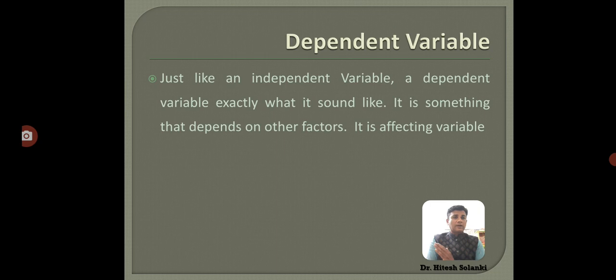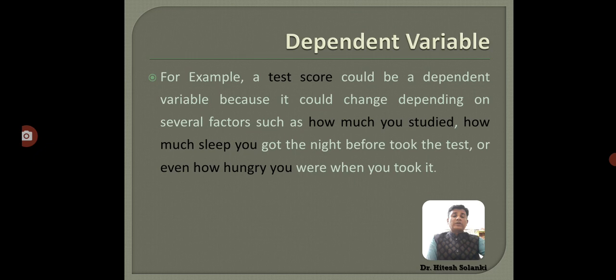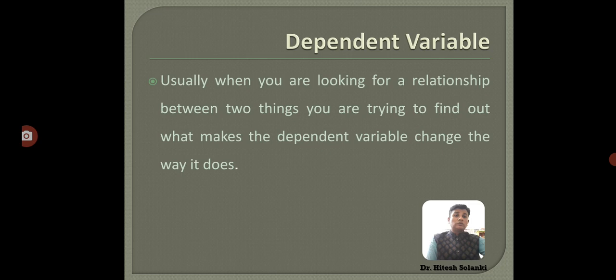Another one is the dependent variable. Just like an independent variable, a dependent variable is exactly what it sounds like, but it is something that depends on other factors. It is an affecting variable, whereas the independent variable is an affected variable — that is the main difference between them. For example, a test score could be a dependent variable because it could change depending on several factors such as how much you study, how much sleep you got the night before the test, or even how hungry you were when you took it.